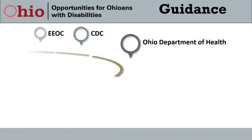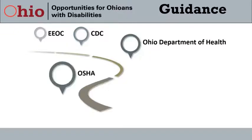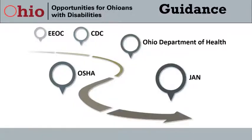For employers with questions about guidelines for the work environment, OSHA has a website called Protecting Workers: Guidance on Mitigating and Preventing the Spread of COVID-19 in the Workplace. The Job Accommodation Network, or JAN website, has a resource called Coronavirus Disease 2019. These resources address common employer questions when following Title I of the ADA and adhering to health and safety guidelines during the pandemic. The take-home message is to keep an eye on the guidance so that you stay up to date.